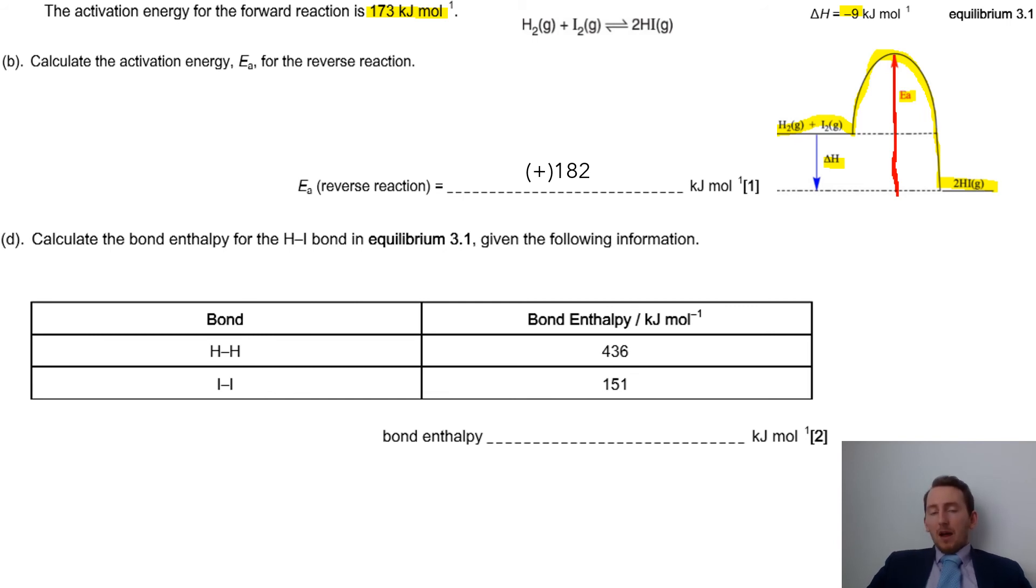Next part of the question, final part of the question, working out the bond enthalpy value for HI. Normally what we do is we take the reactants minus the value for the products, and that would equal, in this case, minus 9.